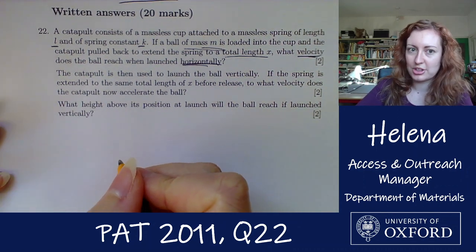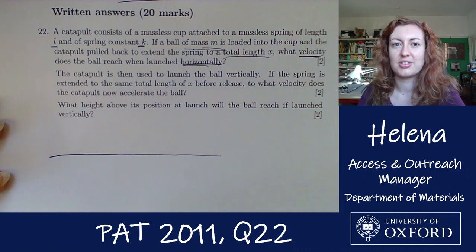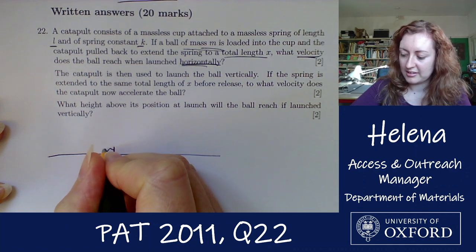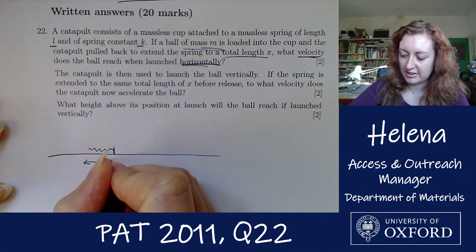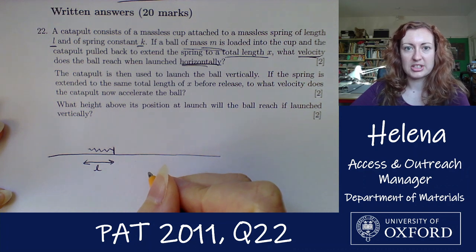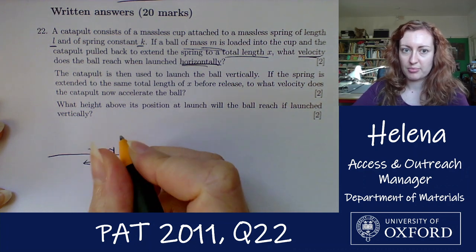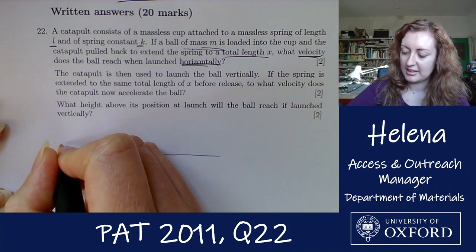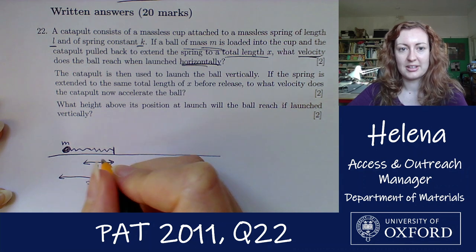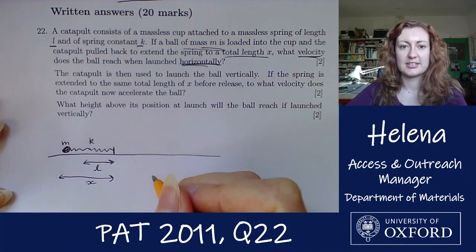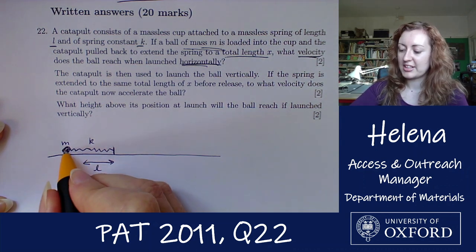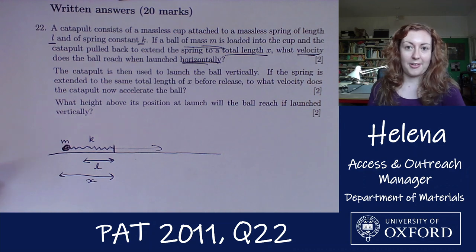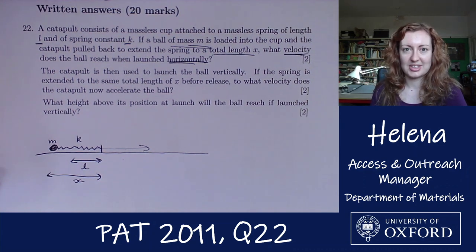We have this setup that's going to launch horizontally, so I'll draw that horizontal surface. We have our spring with natural length l. We're going to put a mass in the cup and pull it back a little bit more to a total length of x, with the ball of mass m in the massless cup at the end of the spring with spring constant k. When we release it, it's going to shoot the ball horizontally across the table.